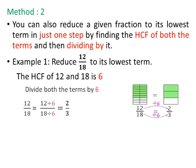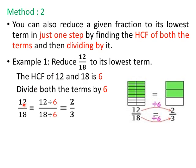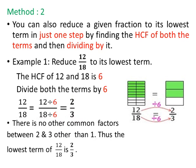We divide both the numerator 12 and the denominator 18 by 6. Thus, 12 divided by 6 upon 18 divided by 6 equals 2 upon 3, as 12 divided by 6 gives 2 and 18 divided by 6 gives 3. There is no other common factor between 2 and 3 other than 1. Therefore, the lowest term or simplest form of 12 by 18 is 2 by 3.